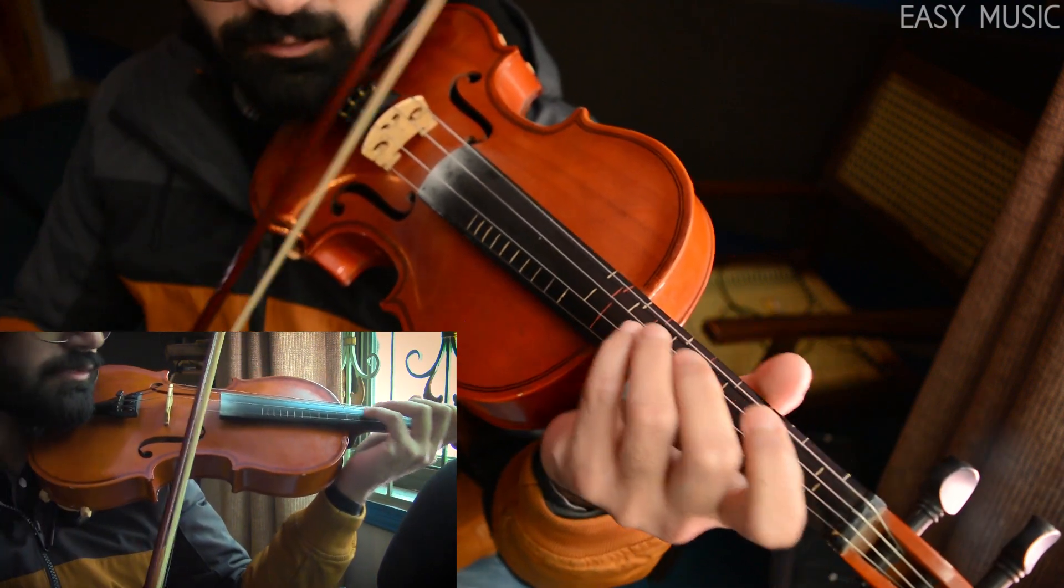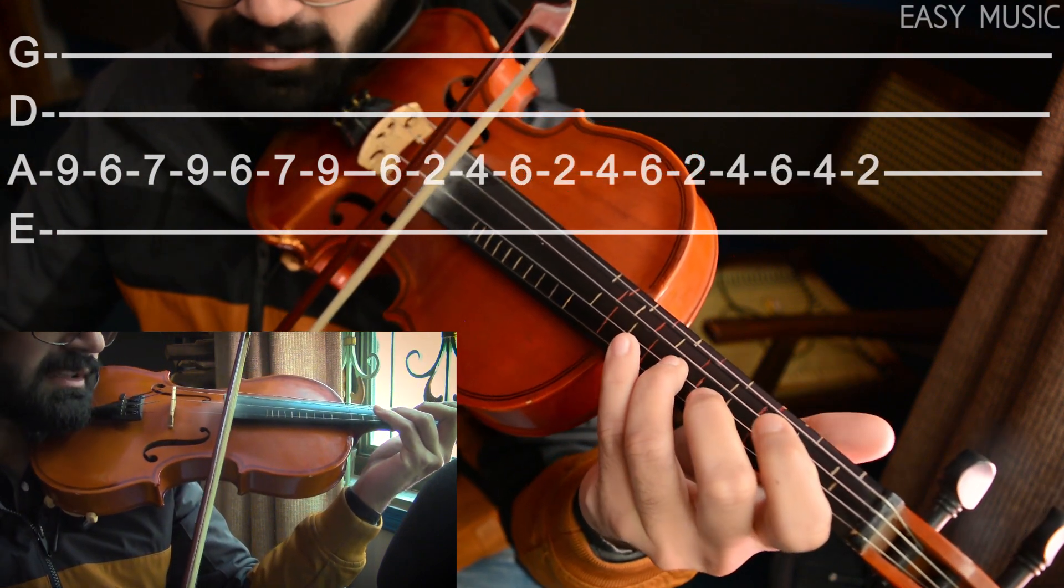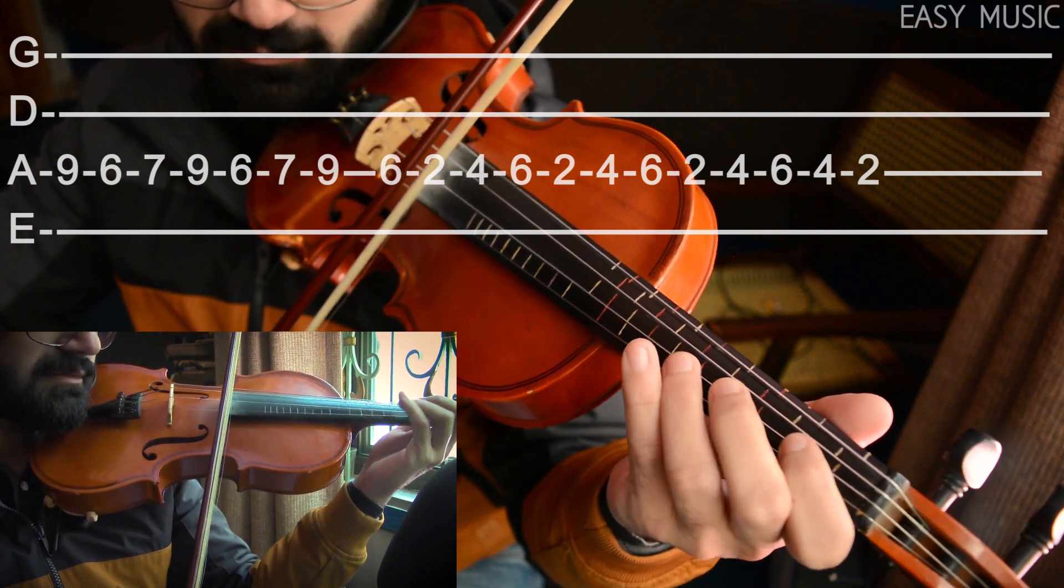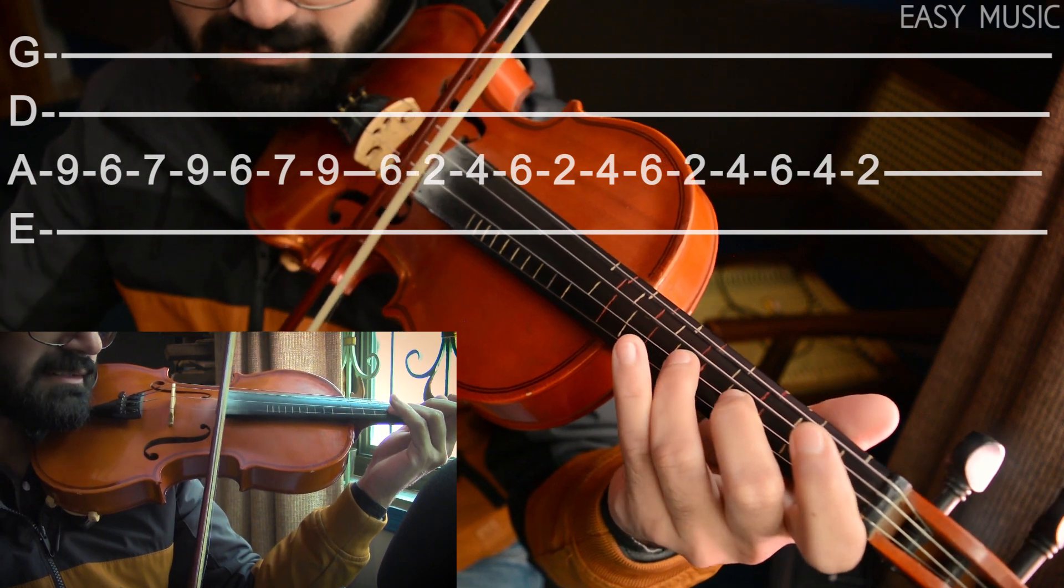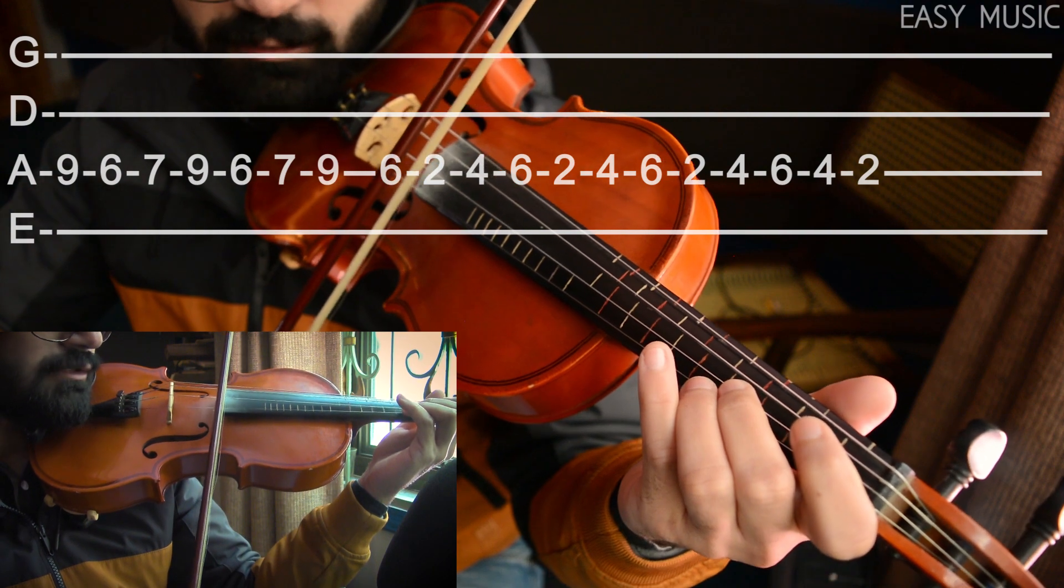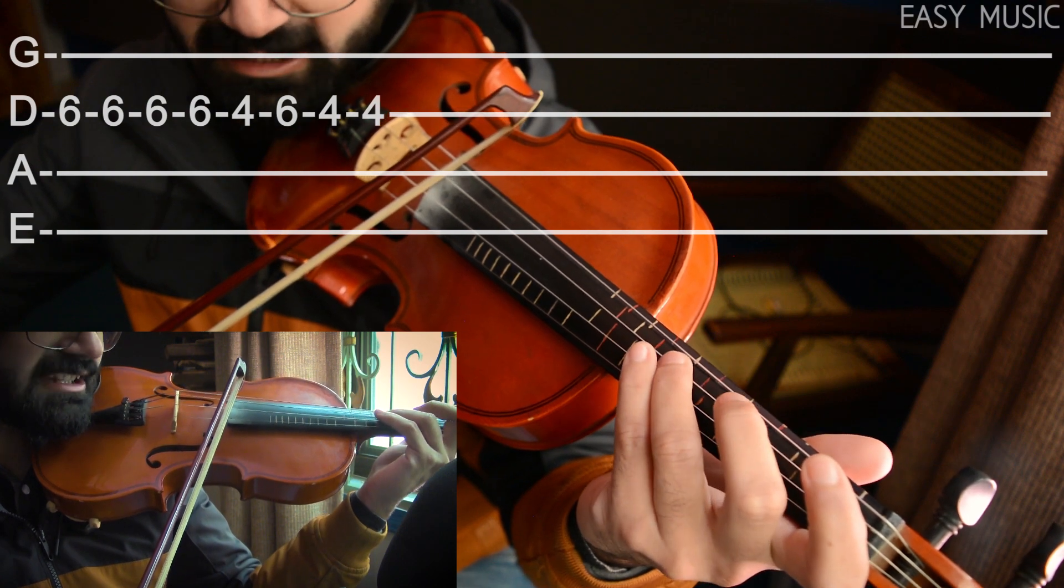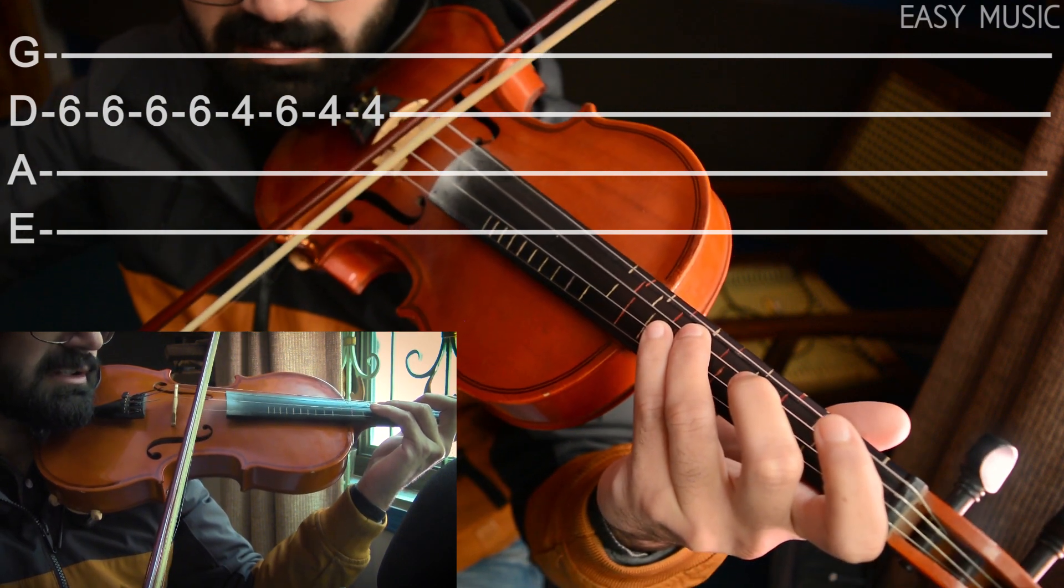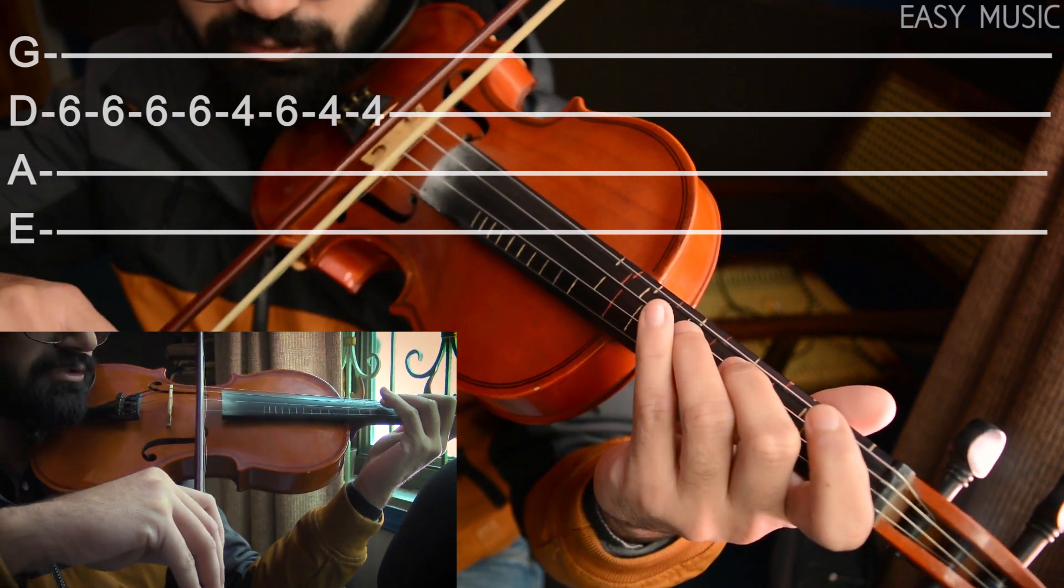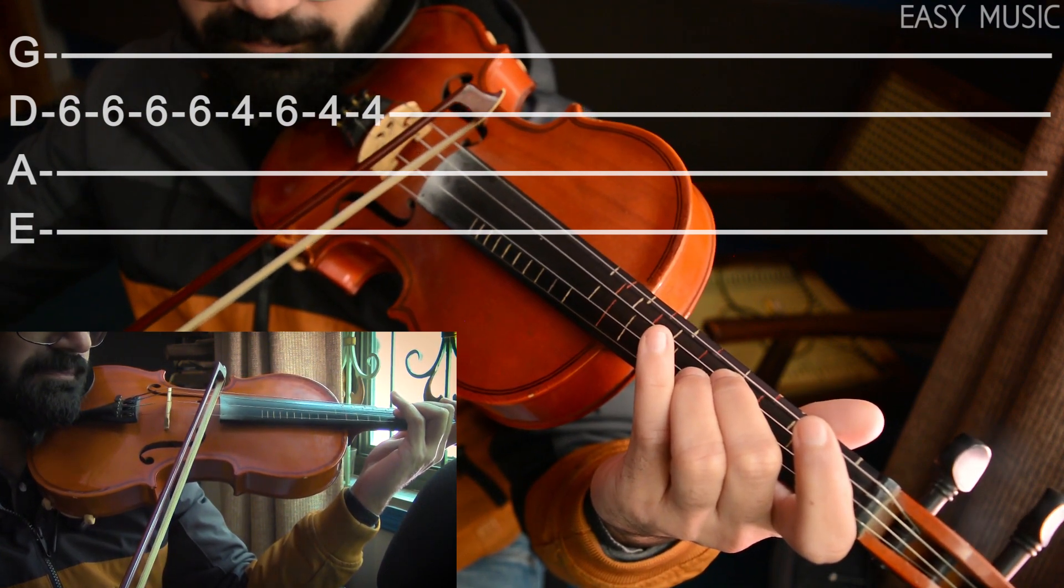So how you're going to play this one is first as I've told you. And then 6th fret, 2nd, 4th, 6th, 2nd, 4th, 6th, again 2nd, 4th, 4th, 2nd and then comes 6th fret on D string. 4th, then 4th, then 4th, 6th, 4th, 4th, 4th.